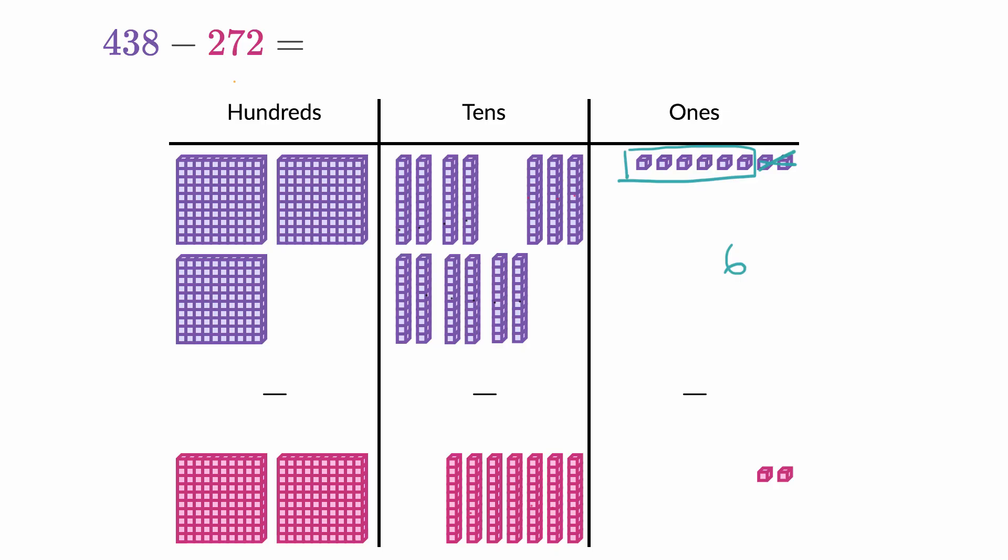So let's do that. Let's take away one, two, three, four, five, six, seven. And what we are left with is six 10s right over here. So now I have six 10s left, six ones left.